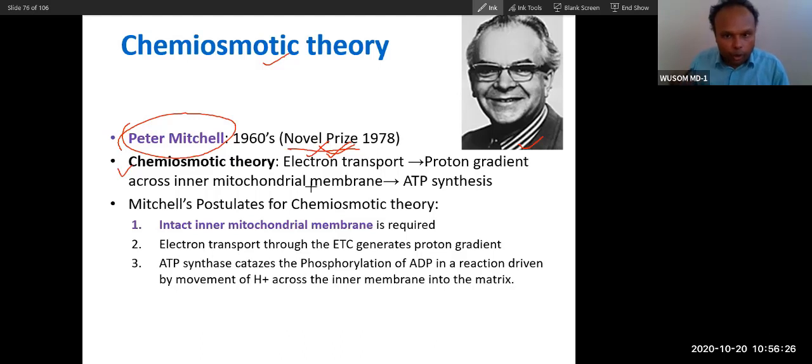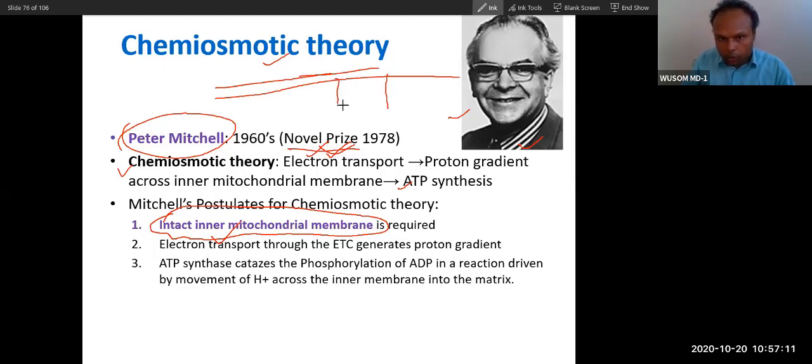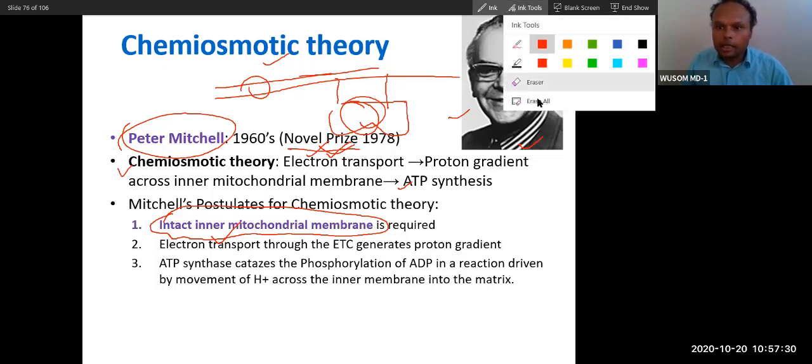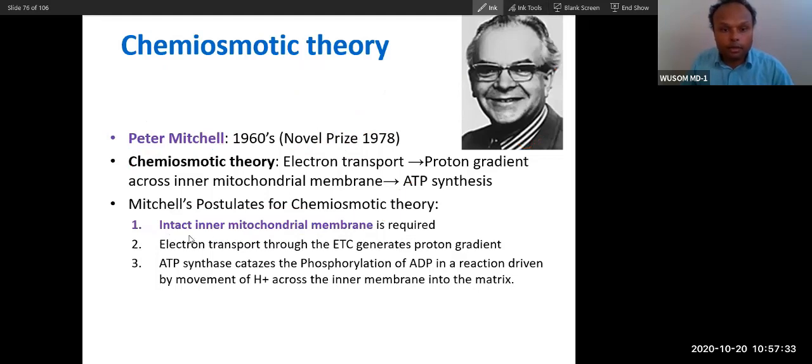So chemiosmotic theory, we have already studied. Electron transport will create proton gradient, and proton gradient will produce ATP through ATP synthase. That's the chemiosmotic theory. He told that the integrity, the intactness of this inner mitochondrial membrane, is very important. You know this intactness of the dam, water is accumulated and it will pass through a certain tunnel to rotate the turbine. This is very important. If the dam does not have integrity, there will not be rotation of this turbine. Water has to flow through this turbine. The same way, integrity of this inner mitochondrial membrane is very, very important.